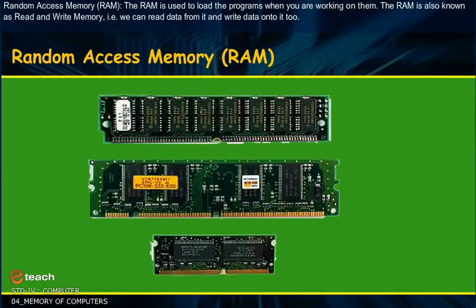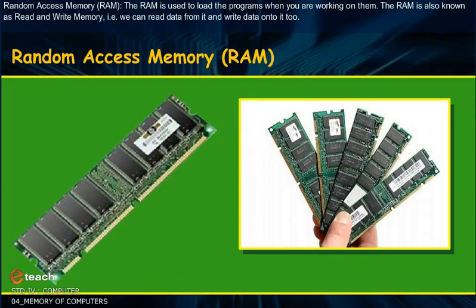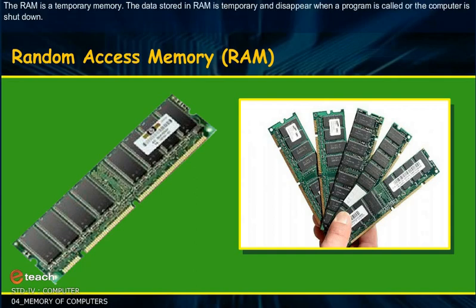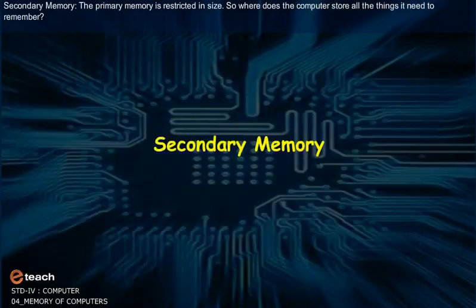Random Access Memory — RAM: The RAM is used to load the programs when you are working on them. The RAM is also known as Read and Write Memory — that is, we can read data from it and write data onto it too. The RAM is a temporary memory. The data stored in RAM is temporary and disappears when a program is closed or the computer is shut down.